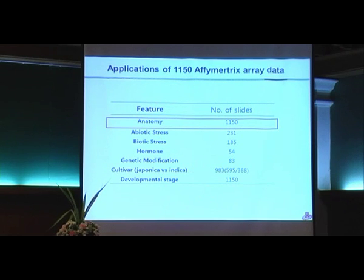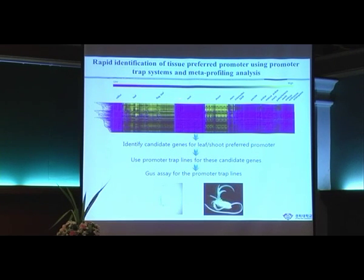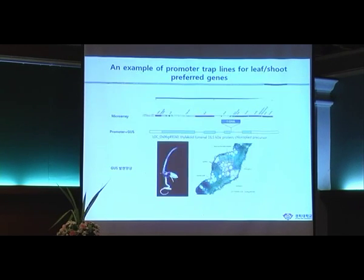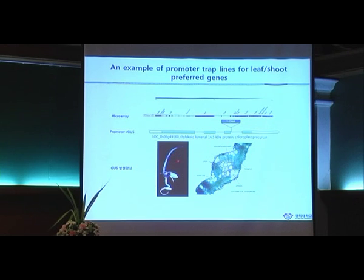Using the anatomy data, we identified leaf- or shoot-preferential genes, and also using promoter trap lines, identified root- or leaf-preferential genes. One example shows high-level expression in a large number of leaf and shoot samples, with strong expression confirmed in leaf and shoot. Through cross-sections of the leaf, this shows mesophyll cell-preferential expression, which may be involved in chlorophyll biosynthesis or other functions.